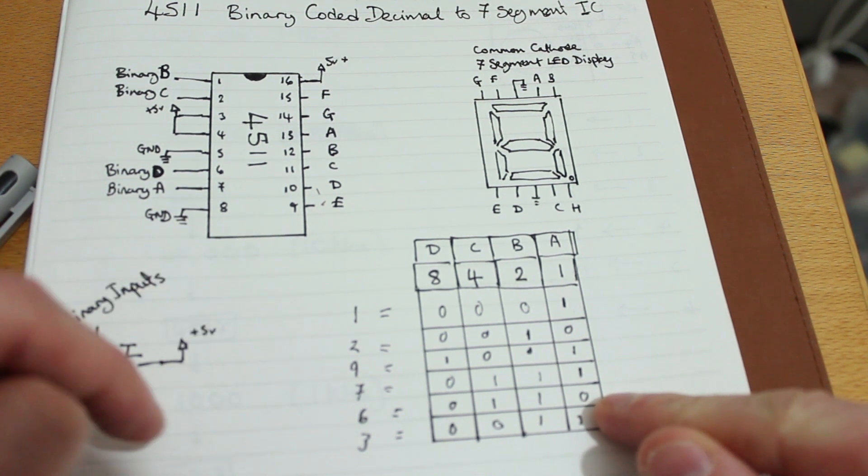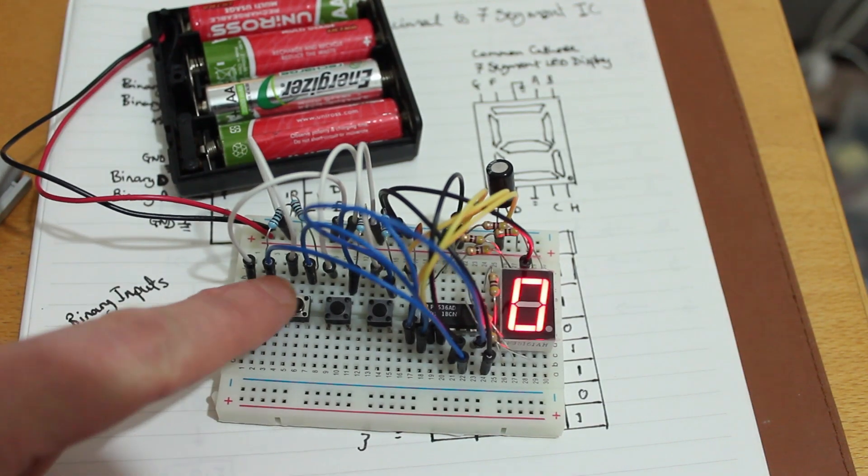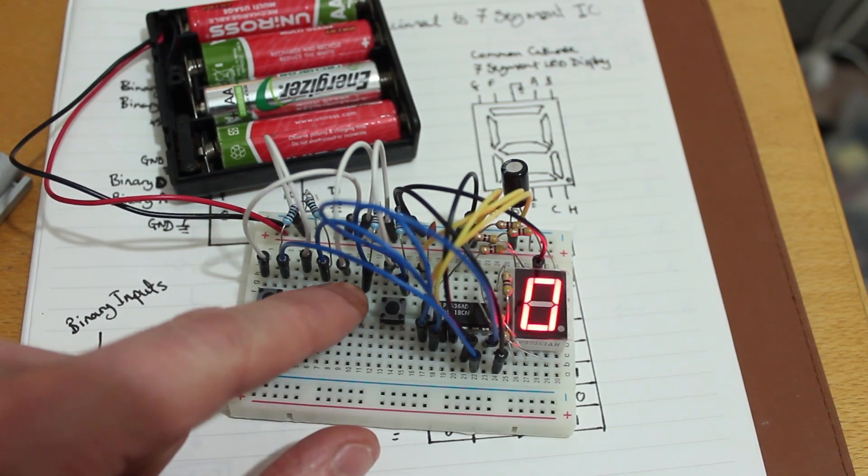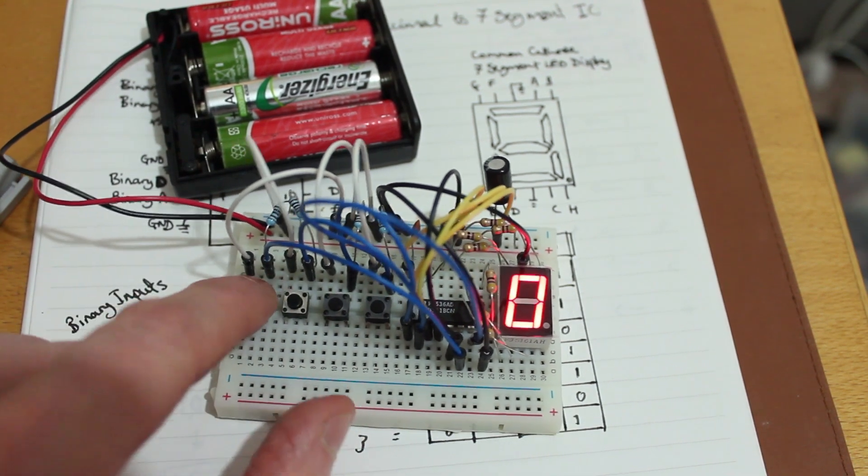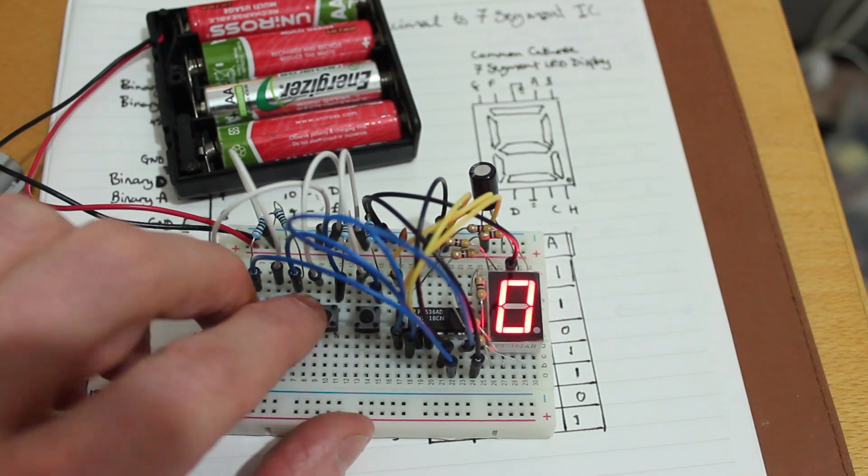So you would just set them high or low depending on what you wanted to appear. So they're pretty simple to set up and they're really more of an exercise really. I think you can get chips that are a bit more featureful these days to run these little 7 segment displays. But they're just fun to play with really.